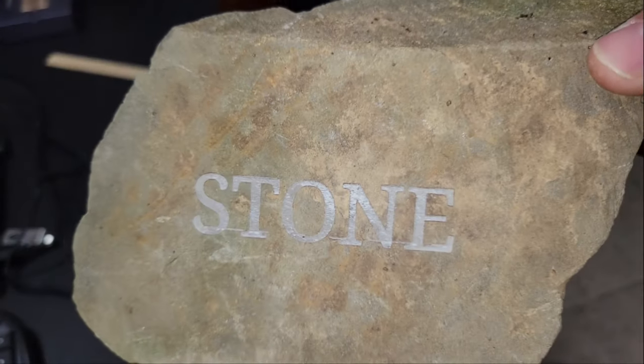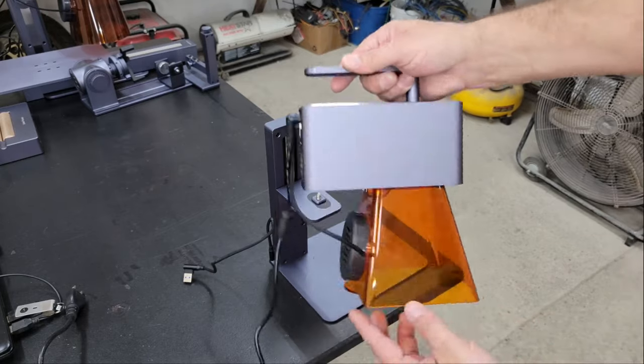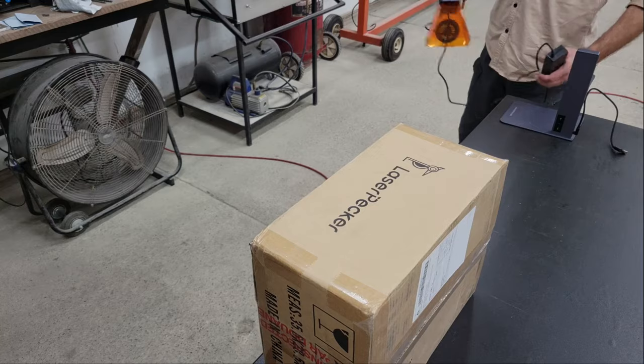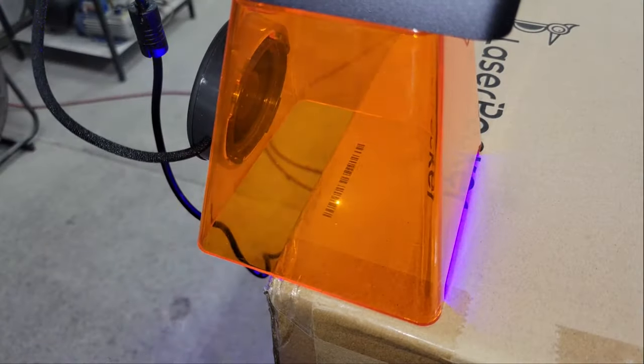All of the engravers are portable handheld machines but in slightly different ways. The LP2 can be detached from the electric stand and baseplate altogether and uses the laser shield as a rest and to maintain the focal point if you want to engrave something on the go.